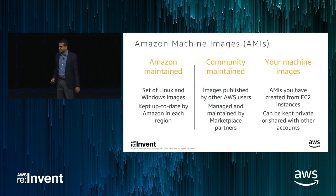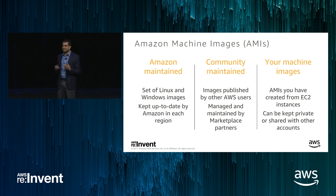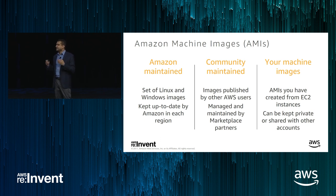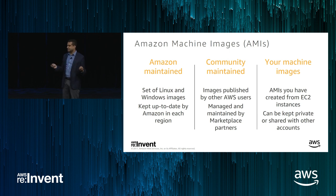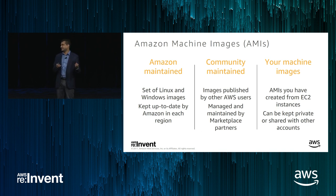What runs on these instances? We have Amazon Machine Images, or AMIs, which define the software and initial configuration — the OS, the application if you want it pre-installed, and some configuration. We have Amazon-maintained images covering most commonly used Linux and Windows images kept up to date in each region. The community maintains many public images, Marketplace partners offer licensed ones, and you can make your own — starting from Amazon or community images, importing from on-premise, and sharing across accounts or keeping them private.